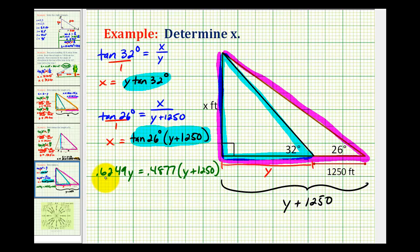Now even though we have some decimals here, notice this equation only contains one variable. So now we'll go ahead and distribute and solve for y. .4877 times 1,250 is 609.625.